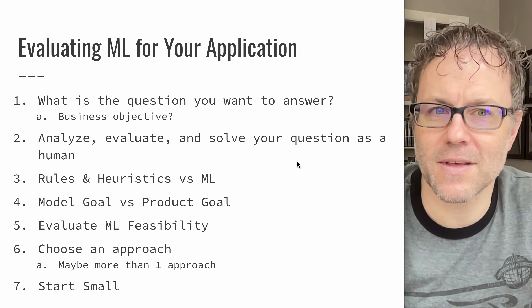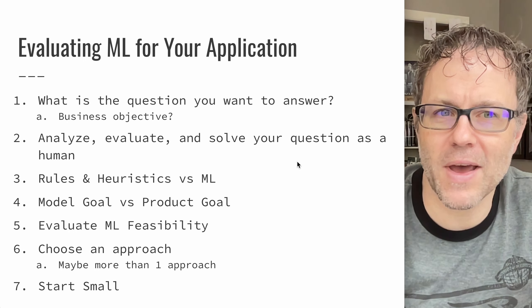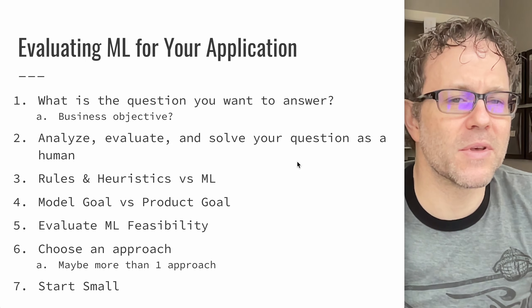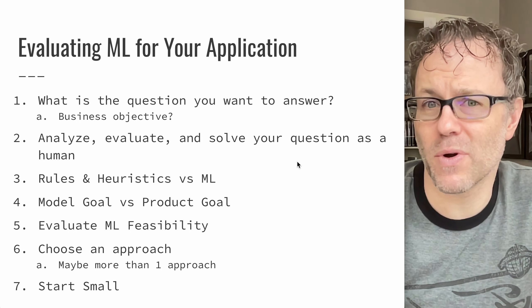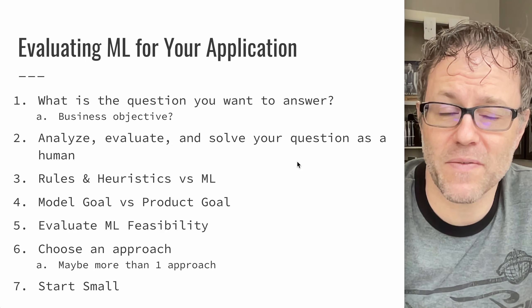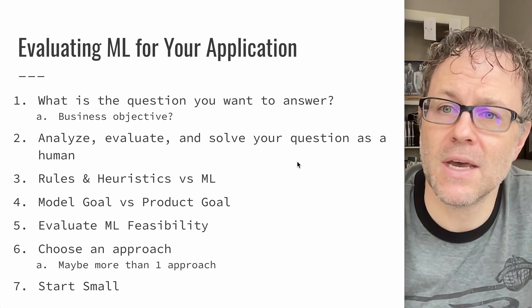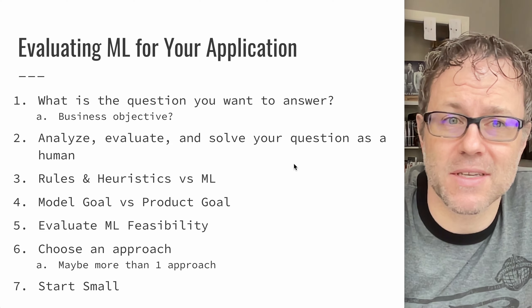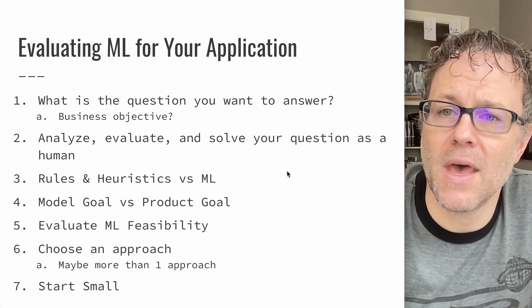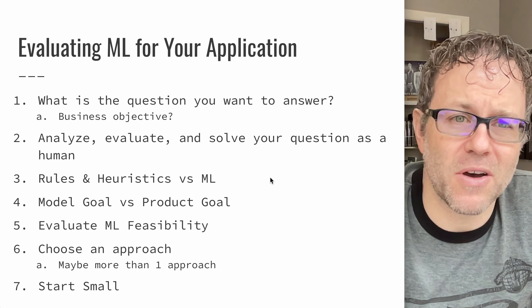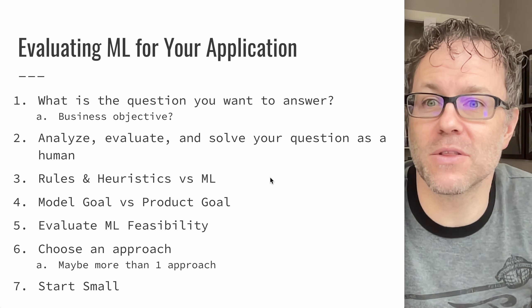A lot of times machine learning is sort of the hammer that pounds all nails, and if you wield it that way, everything looks like a nail. Sometimes, though, the solution is much more cost-effective and straightforward — just build a simple set of if-else statements or a simple algorithm that can evaluate your inputs and give you the output you expect. Maybe it's less probabilistic, but it's good to think about the process of how you might solve this problem. Rules and heuristics can often be a good substitute for a machine learning model.